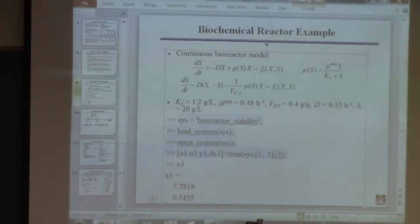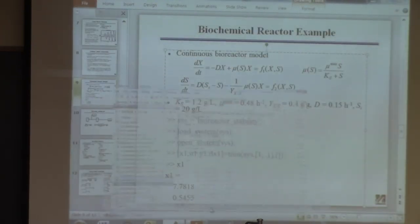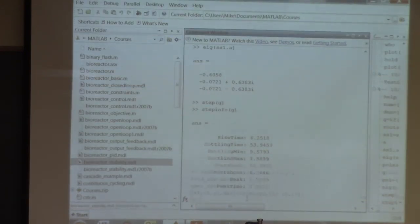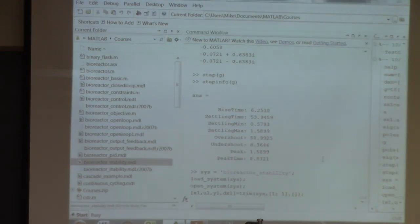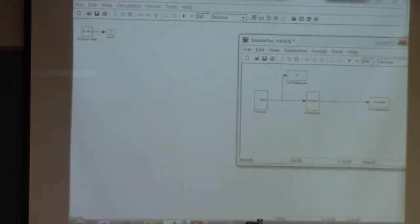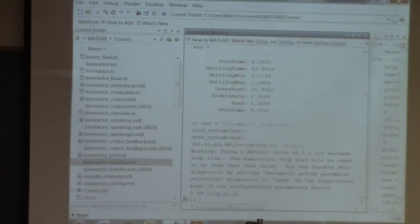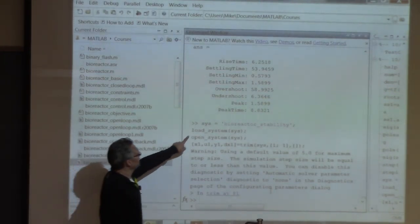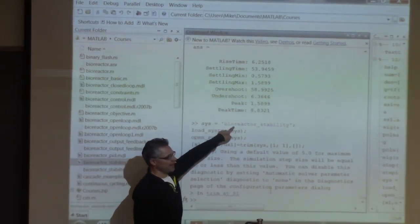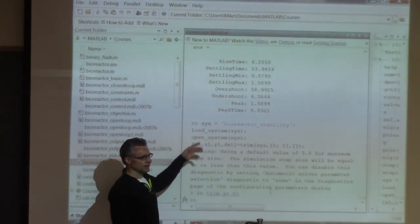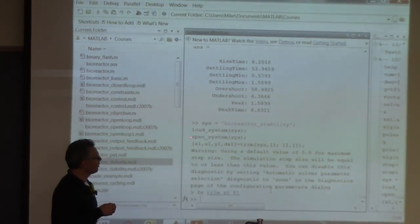So if we go back to here, I have something called bioreactor stability dot MDL. And what I aspire to do is find the steady state for this model that's described in there, which is those equations I just showed you, and also to linearize the model about that point so I can use all the tools we've been talking about. So just so you understand, that's where the name bioreactor stability came from. It's an existing MDL file, I didn't just make it up.